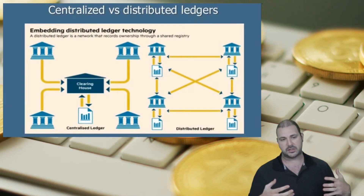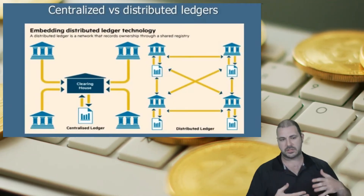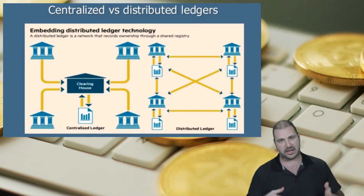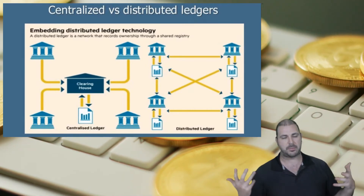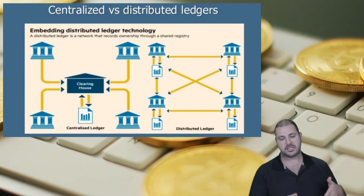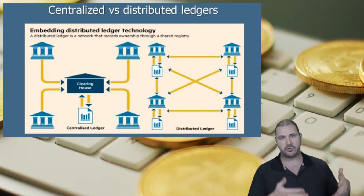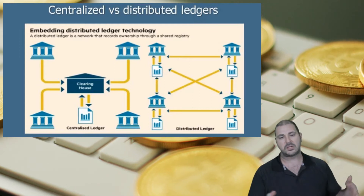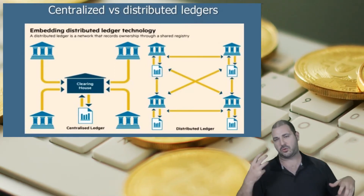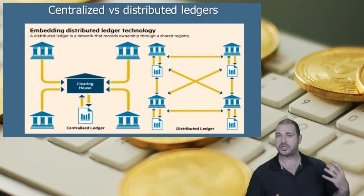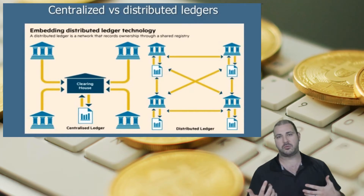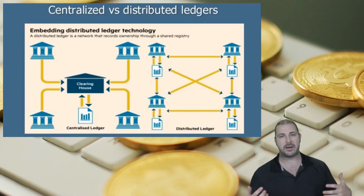In a centralized system, banks go to the clearinghouse and put it on a ledger. The problem is someone could go in and hack and change things — that's the problem with a centralized database. Whereas on a decentralized distributed network, many different nodes confirm transactions. So if one person tries to alter a transaction, the other computers in the network will say no, that's not real, and won't let it happen.